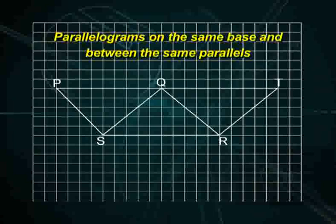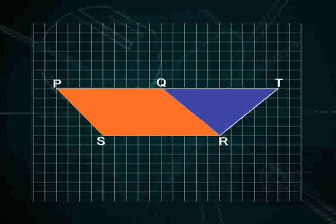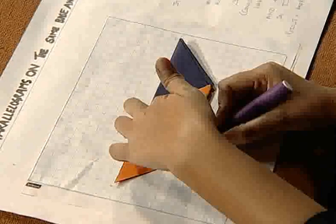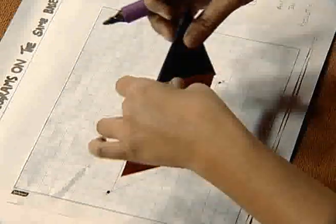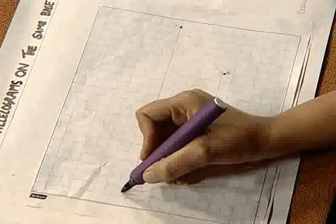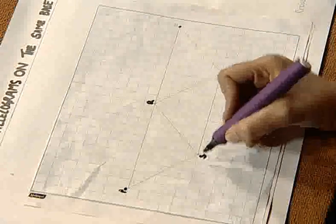Now let's start our activity. We take two parallelograms on the same base and between same parallels. We take two parallelogram replicas and place them so that their bases lie on each other, and then we trace these parallelograms by marking the points and naming them P, Q, R, S and T.